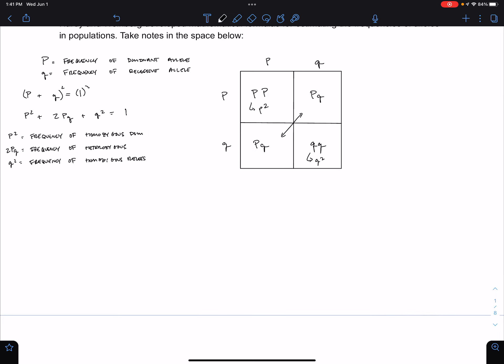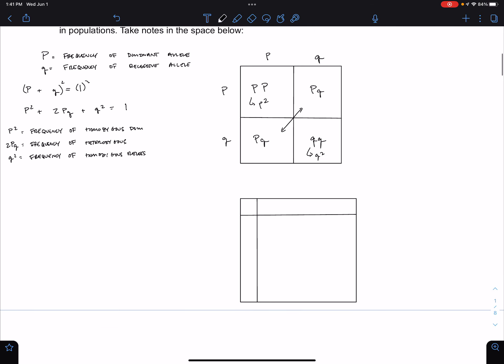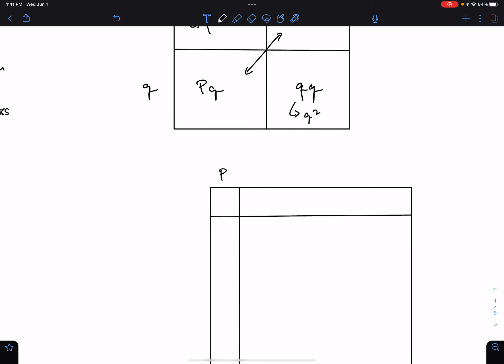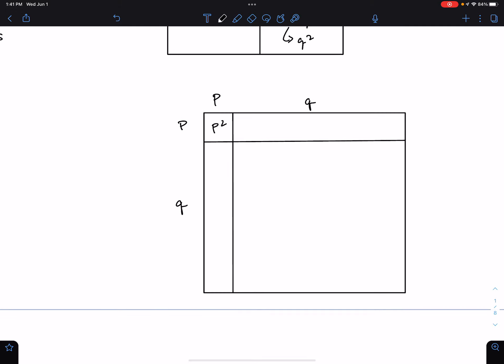However, within a population, the frequency of P and Q might not initially be the same. And so we can construct the size of the Punnett square such that the size of the boxes represent the frequency of P and Q within the population. So in this case, if this is P, and this is Q, and this is P, and this is Q...